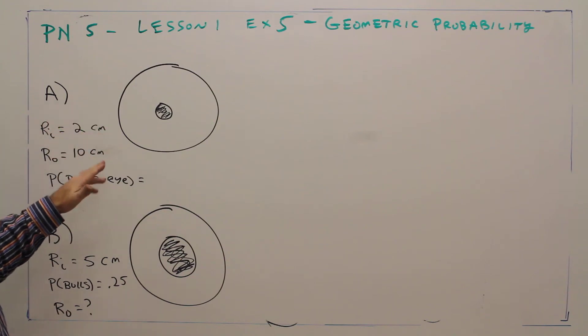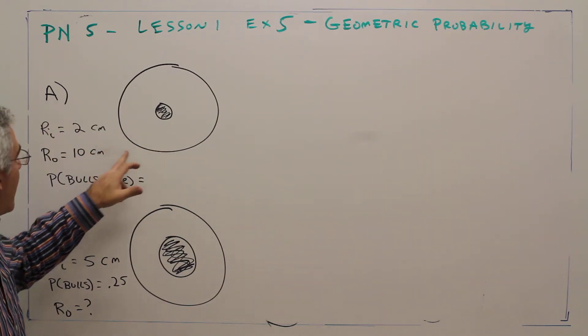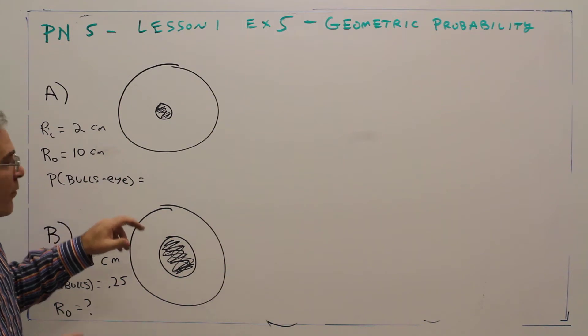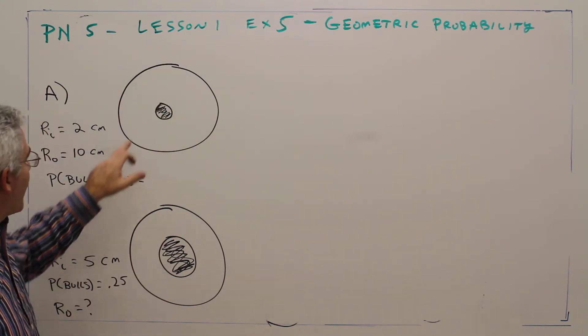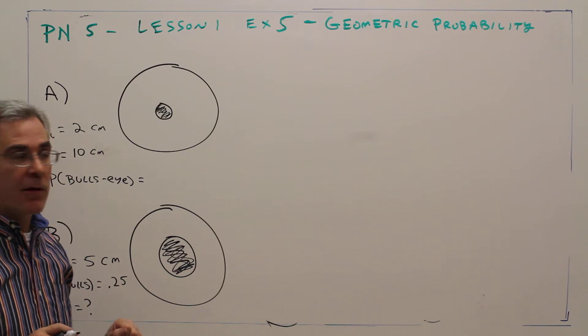First problem. The inner radius is two centimeters. The outer radius is ten centimeters. You randomly throw a dart at the circular target. What's the probability that it will hit the bullseye?